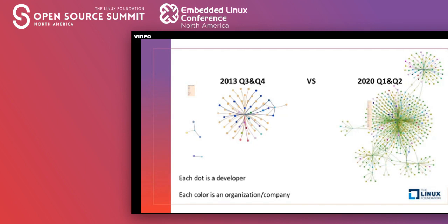Bringing in the previous analysis as a quick overview: dots are now developers and the squares are the main organizations we are analyzing for Uber. Each dot is a developer connected to one of these blue squares representing organizations — Uber, Uber Research, N3DB, and others. Each color represents a different organization or company. We can compare what this looked like in 2013 versus 2020.